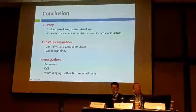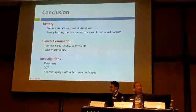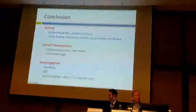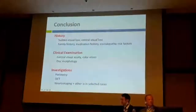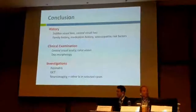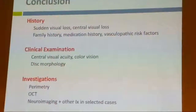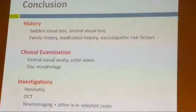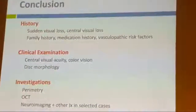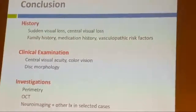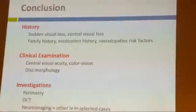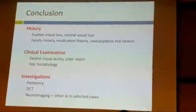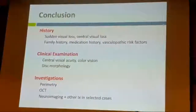In conclusion, the most important aspect is history. When there is sudden visual loss, central visual loss, or a significant family or medication history, you should think about non-glaucomatous optic neuropathy. In clinical examination, pay particular attention to central visual acuity, colour vision, and disc morphology, but always complement this with perimetry and OCT. Neuroimaging should be reserved for selected cases.